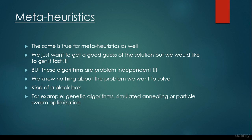What about meta-heuristics? The same goal applies — we want to get a good guess of the solution and we would like to get it quite fast, so we are not able to use brute force search. But these algorithms are problem independent. It's very important that we don't know the underlying features of that given problem — we know nothing about the problem we want to solve; it's kind of a black box method. For example, genetic algorithms, simulated annealing, or particle swarm optimization fall into this category.